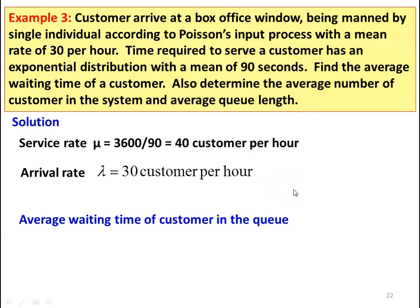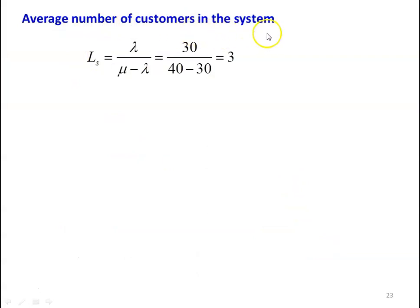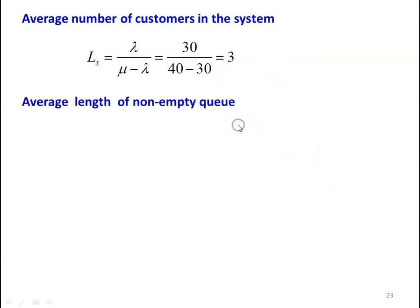Average waiting time of a customer in the queue is given by Wq equal to lambda divided by mu times (mu minus lambda). Substituting numerical values: 30 divided by 40 times (40 minus 30) equals 0.074 hours. Each customer waits in the queue for 0.074 hours. Average number of customers in the system: Ls equals lambda divided by (mu minus lambda), which is 30 divided by (40 minus 30) equals 3 customers in the system including service.